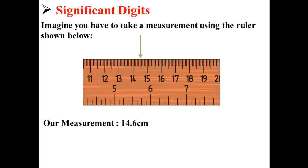Let's say that we've taken a measurement of 14.6 centimeters. This measurement contains three significant digits. How was I able to determine that?